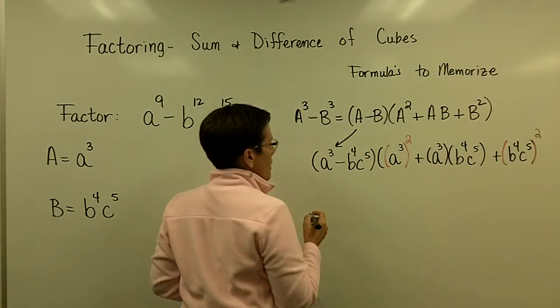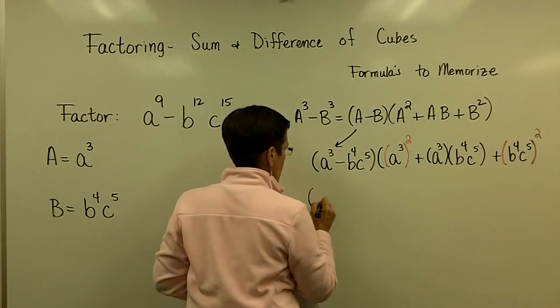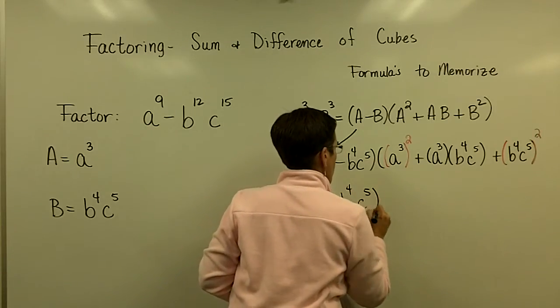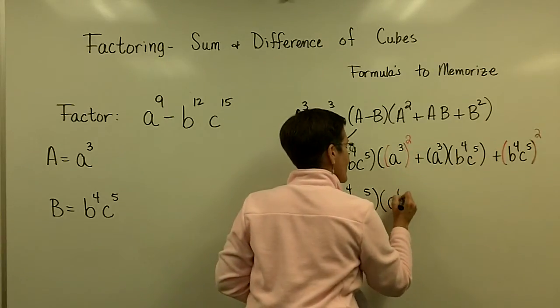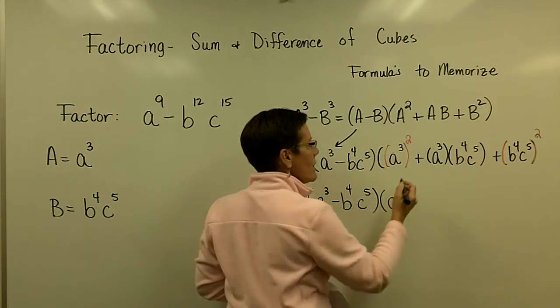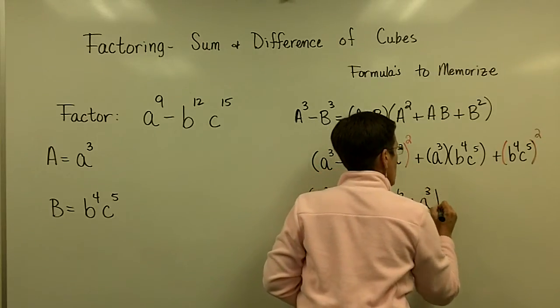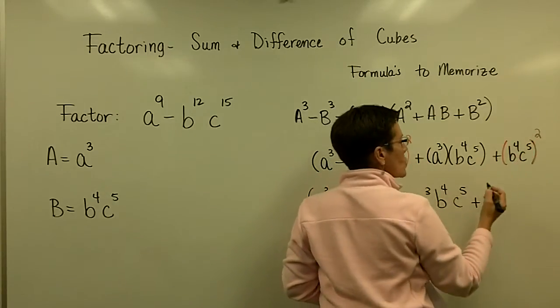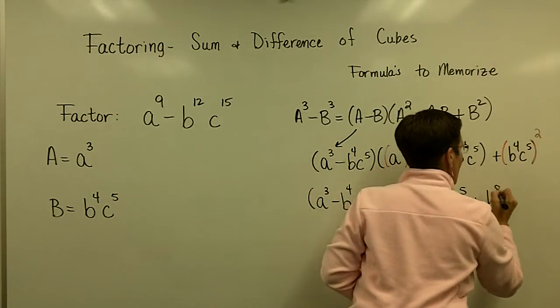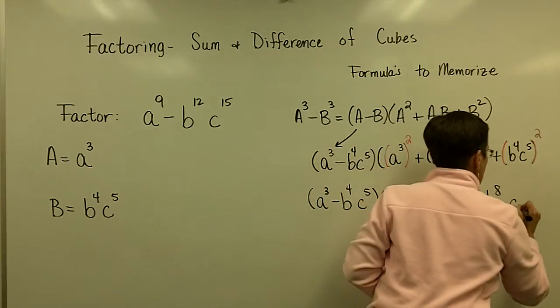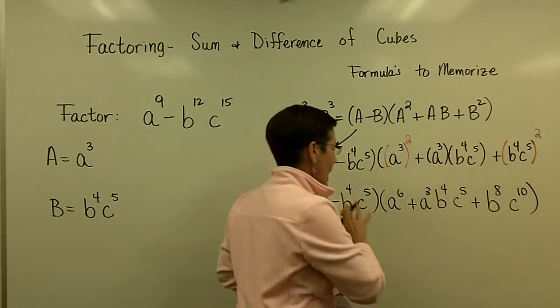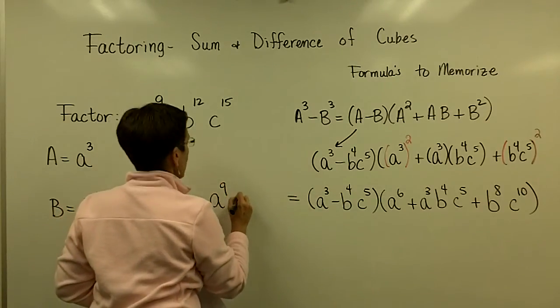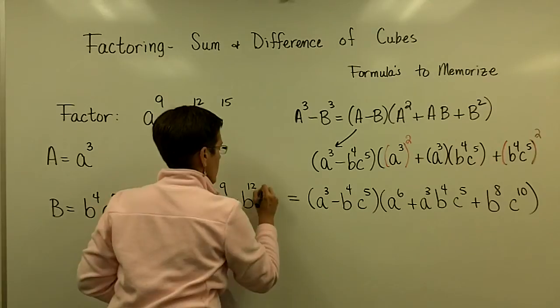Now I just recopy this binomial. So I have A cubed minus B to the fourth, C to the fifth. And here I have A to the sixth - I've got to simplify that. This doesn't require parentheses anymore, I'll keep it in alphabetical order. When I take B to the fourth and square it, I get B to the eighth. And C to the fifth squared is C to the tenth. This is the factored form of A to the ninth minus B to the twelfth, C to the fifteenth.